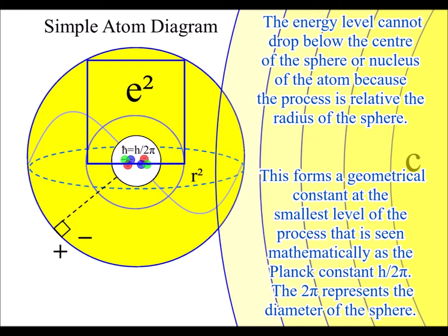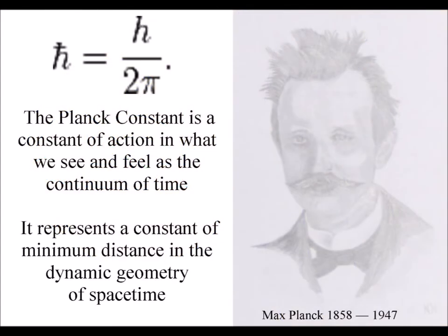The energy levels cannot drop below the center of the sphere or nucleus of the atom because the process is relative to the radius of the sphere. This forms a geometrical constant at the smallest level of the process.